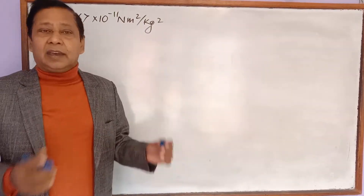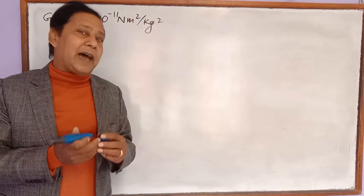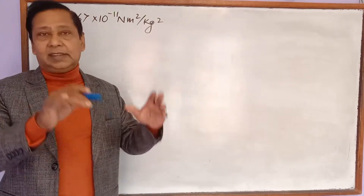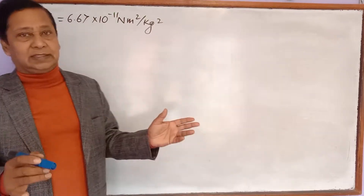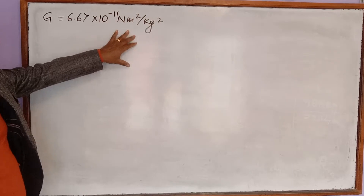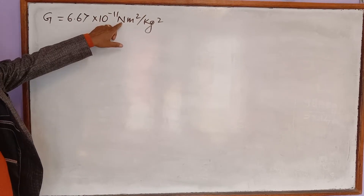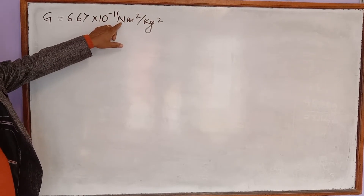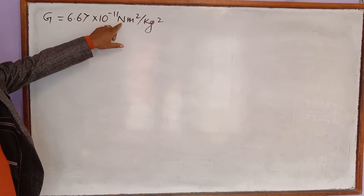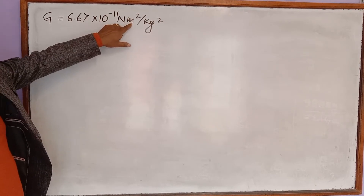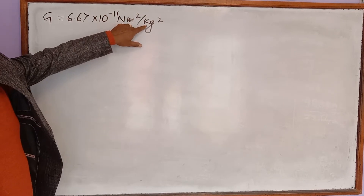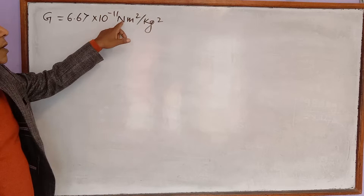Today we are going to convert it into the CGS system. The question is: convert the value of capital G into the CGS system. In CGS system, Newton doesn't apply — force is measured in dyne, length is measured in centimeter, and mass is measured in gram. That's what we have to convert.